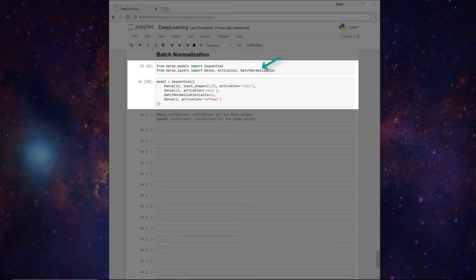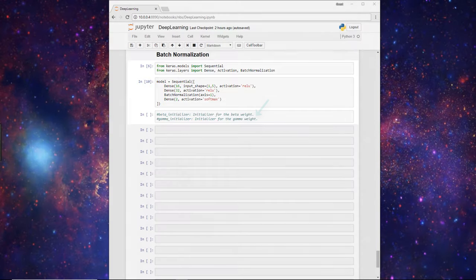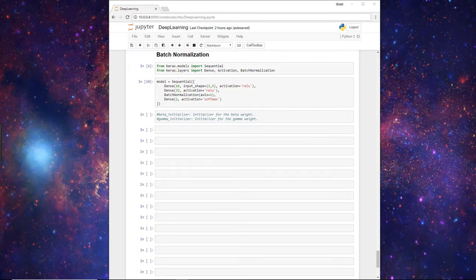Now the only parameter that I'm specifying here is the axis parameter. And that's just to specify the axis for the data that should be normalized, which is typically the features axis. There are several other parameters that you can optionally specify, including two called beta initializer and gamma initializer. These are the initializers for the arbitrarily set parameters that we mentioned when we were describing how batch norm works. These are set by default to 0 and 1 by Keras, but you can optionally change these and set them here, along with several other optionally specified parameters as well.